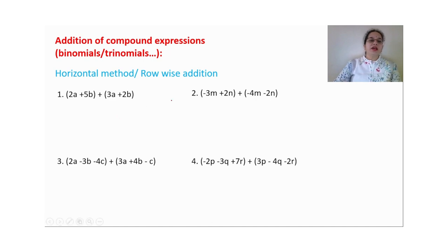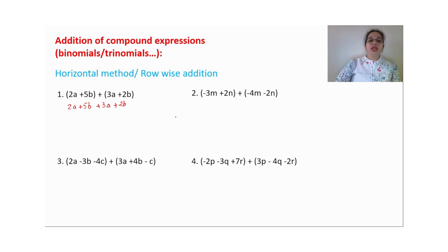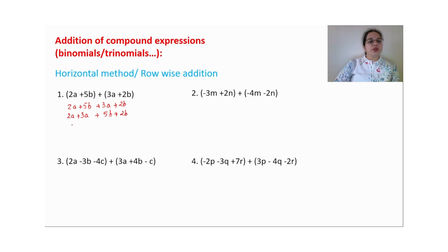Now we will add using the horizontal method. The concept is the same. When you add, first open the brackets: (2a + 5b) + (3a + 2b) becomes 2a plus 5b plus 3a plus 2b. Remember the piggy bank — collect like terms together, friends sit with friends. Then: 2 plus 3 gives 5a; 5 plus 2 gives 7b. Since a and b are not like terms, the answer is 5a plus 7b.